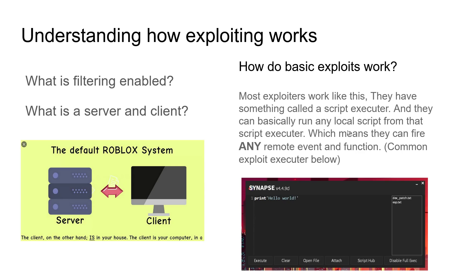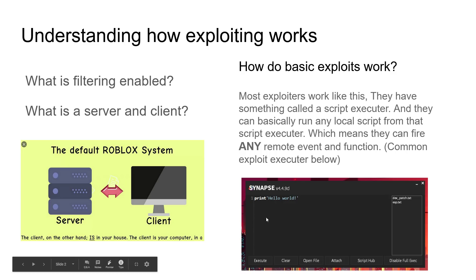First things first, we need to understand how exploits work. To do that, you need to know what filtering enabled is, and then you need to know what a server and a client are. Filtering enabled used to be a setting in Roblox. The client is your computer, and the server is like your server. If filtering enabled wasn't on, anything that happened on the client would just happen on the server too. So if an exploiter changed their coins to a million or something, it would happen on the server and show every other client as well.